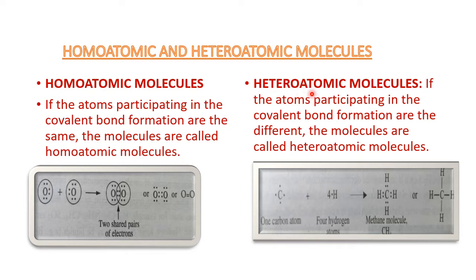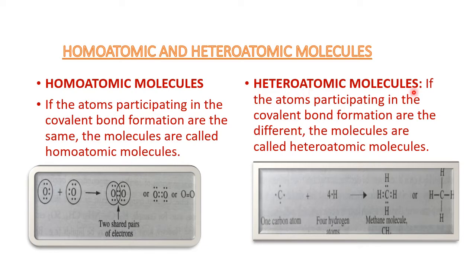Heteroatomic Molecules: if the atoms participating in the covalent bond formation are different, the molecules are called heteroatomic molecules. For example, in the formation of methane molecule, one carbon atom shares its four electrons with four hydrogen atoms to form carbon-hydrogen single bonds. There are four single covalent bonds between carbon and hydrogen. As the combining atoms are two different types — carbon atom and hydrogen atom — the molecule is known as a heteroatomic molecule.